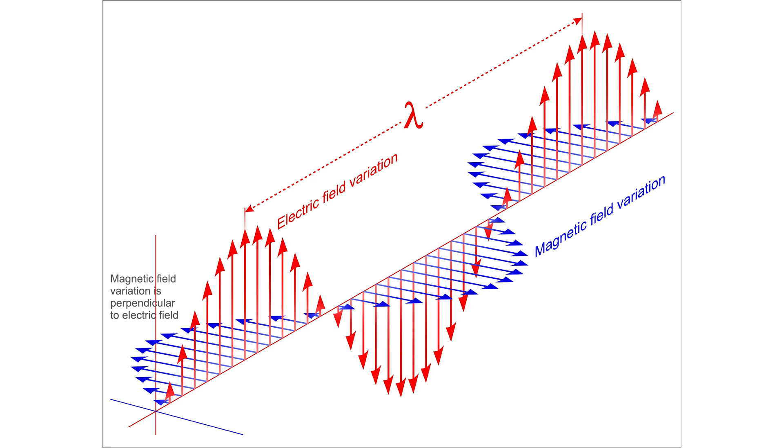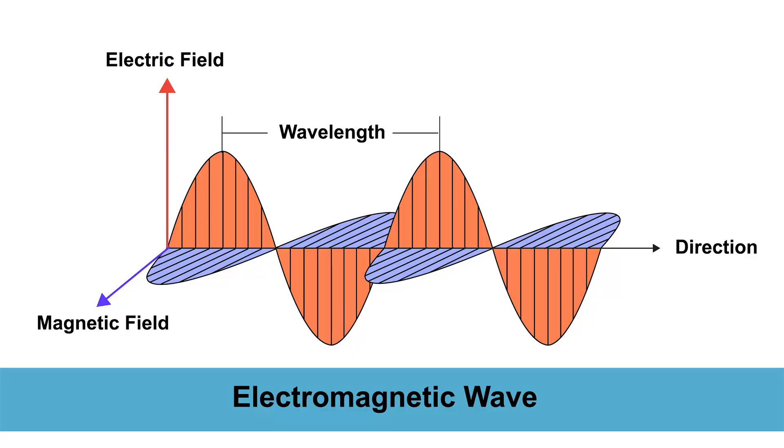It turns out that all light — we call it electromagnetic radiation — all light: x-rays, light, infrared, all of it is electromagnetic radiation. It's electric fields oscillating 90 degrees to magnetic fields and propagating 90 degrees. You can see the direction of propagation on the figure here, 90 degrees to those electric and magnetic fields.